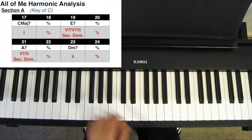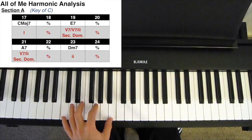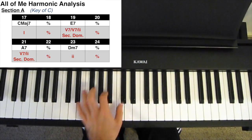We go back to the A section, so we'd analyze it the exact same way, with the C going to the E7, A7 to D minor 7.